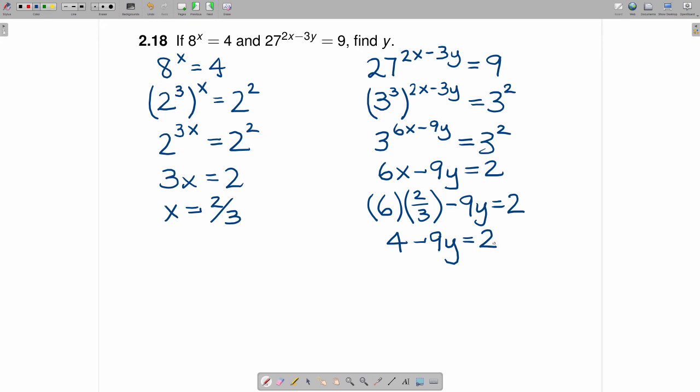The way you solve this equation for y is you subtract 4 from both sides. When you subtract 4 from the left-hand side, you get just negative 9y. When you subtract 4 from the right-hand side, you get negative 2.